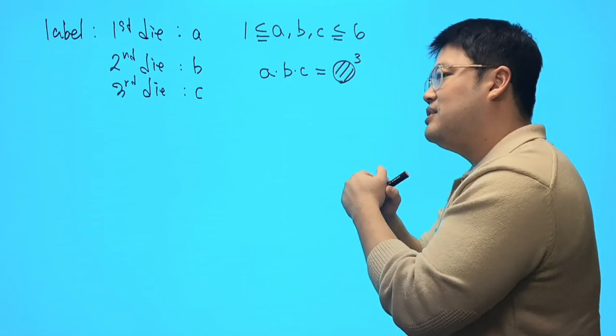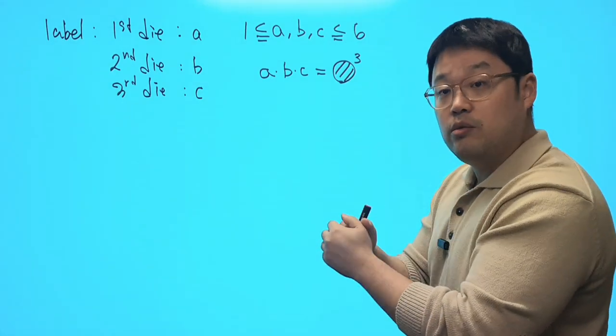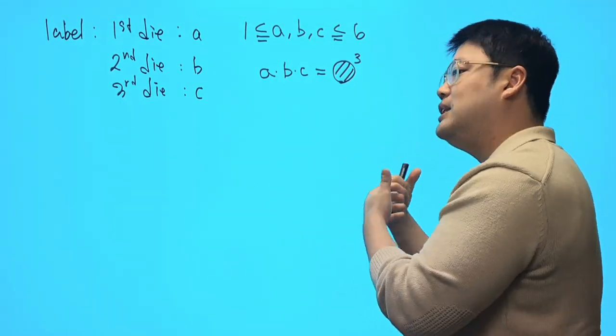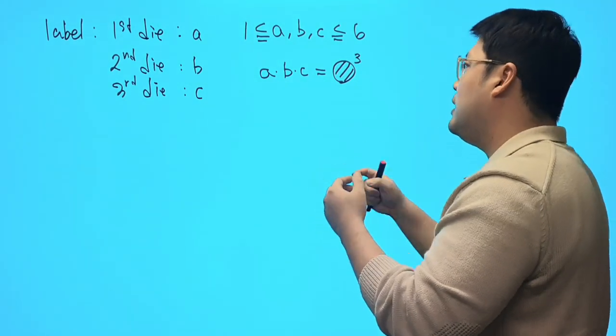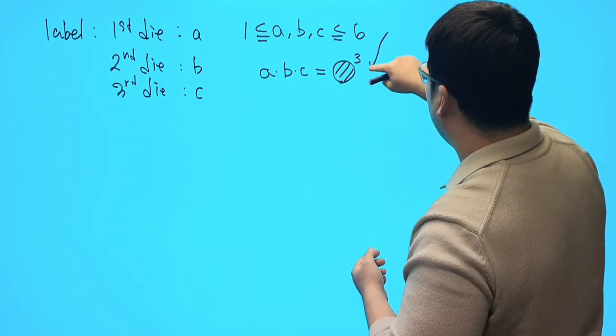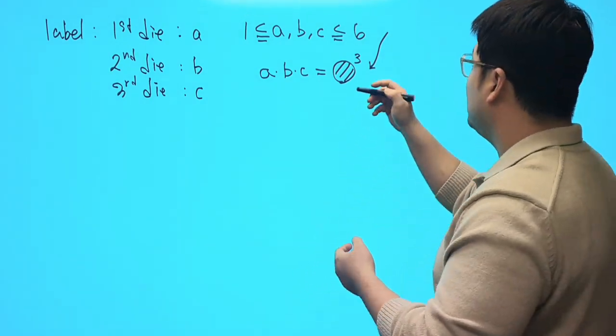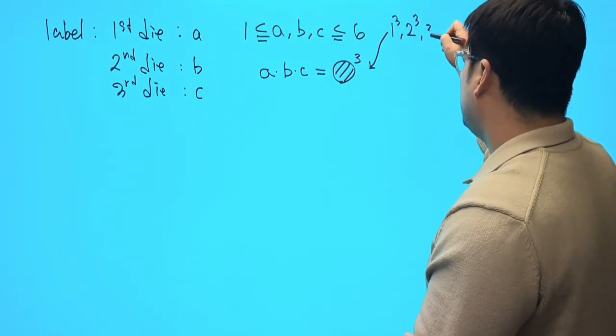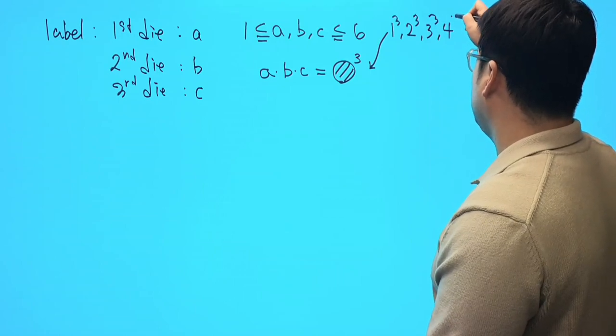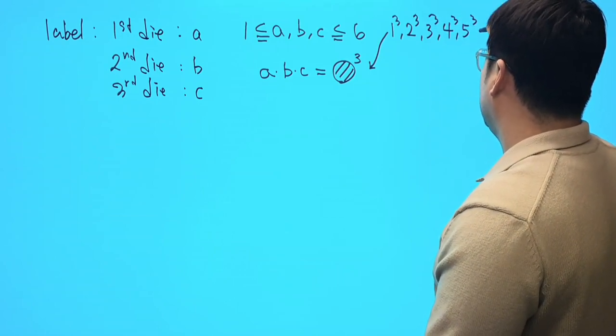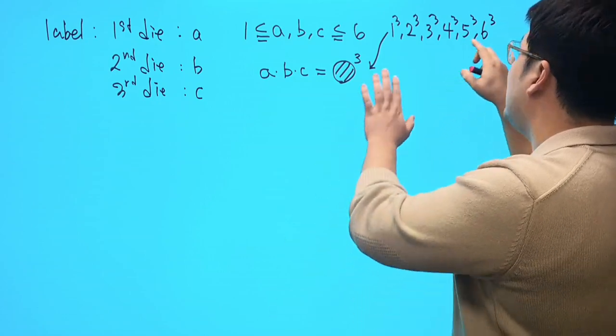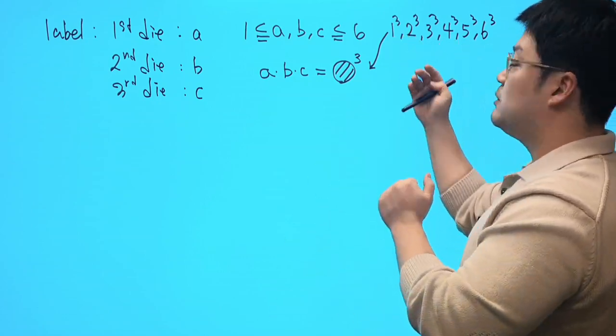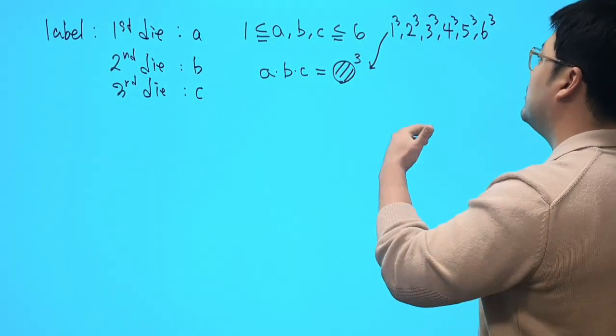But the problem that we face is that we start from one cube. We start from one, and we end up six cubed. So probably we can list all perfect cubes that may appear. So in other words, it could be one cubed, two cubed, three cubed, four cubed, five cubed, and six cubed. And if you have found up to this part, we're done, right?